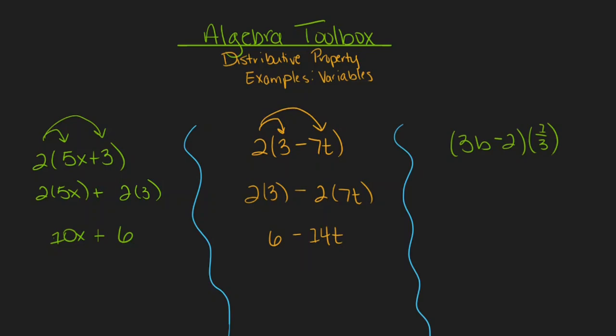Finally, we have the expression the quantity 3b minus 2 times one-third. There are a couple funky things happening with this one that are important for us to talk about. First of all, we see the value that we're multiplying the entire expression or quantity by at the end of the quantity. That's okay.